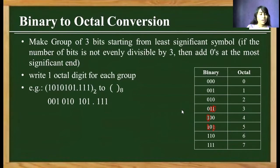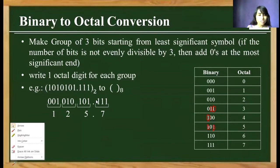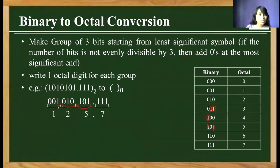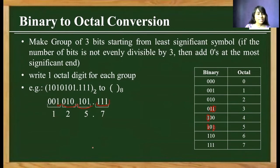Let's work through the example with binary digits. We group the digits into sets of 3 starting from the point side. The group 101 is equivalent to octal 5, then 010 is octal 2, and the remaining single bit 1 can have 00 added to the most significant side to make 001, which is octal 1. After the point, the group is equivalent to octal 7. So the answer is 125.7 in octal.